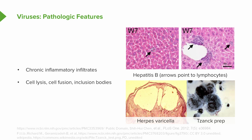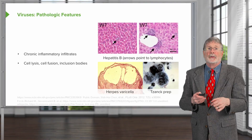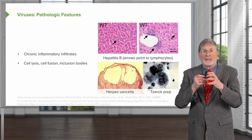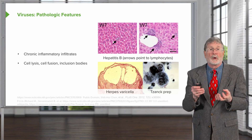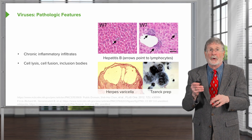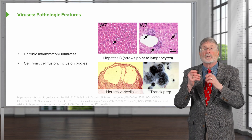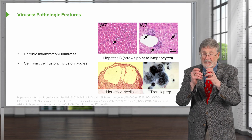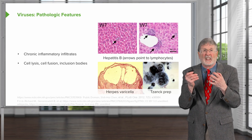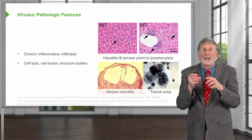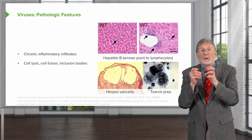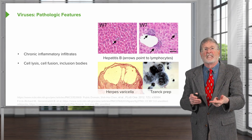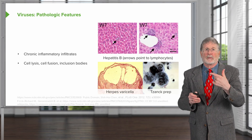You can also get inclusion bodies. Depending on the accumulation of viral proteins or viral genomic material, you can actually see collections of eosinophilic pink, or even sometimes bluish, material within the cell. And that will tell us that the cell is probably infected.